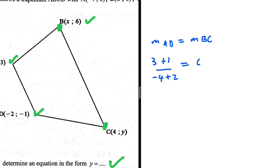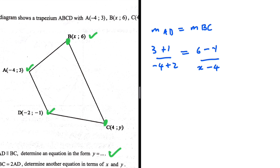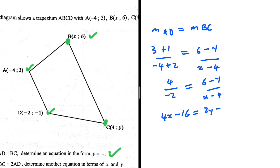The y-value will therefore be 6 minus y₁, which is the y-coordinate of C (which is y), divided by x-value of B (which is x) minus the x-value of C (which is −4). So: (3 + 1) = 4, (−4 + 2) = −2. This gives us (6 − y) over (x − 4). If we cross-multiply we get 4x − 16 = 2y − 12.